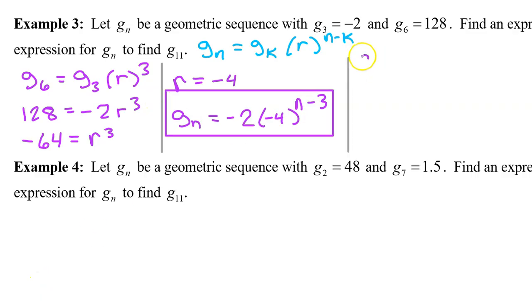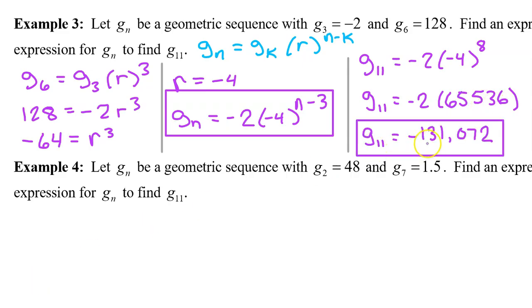Now let's use this expression to find g11, which will equal negative 2 times negative 4 to the 11 minus 3 power. In other words, to the 8th power. Negative 4 to the 8th power turns out to be positive 65,536. So g11 is negative 131,072.